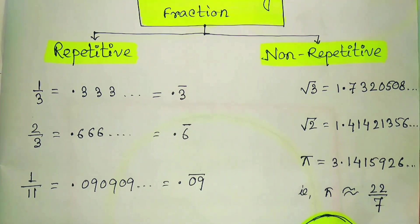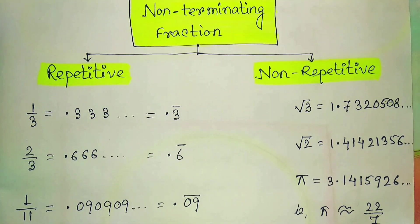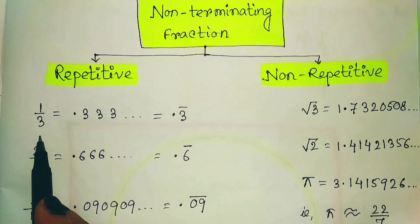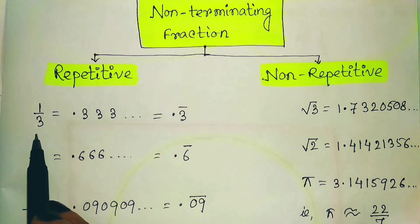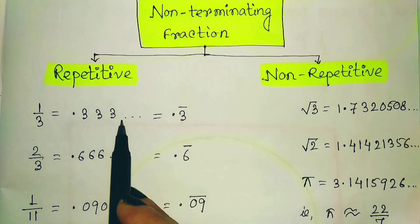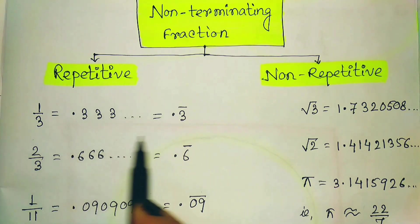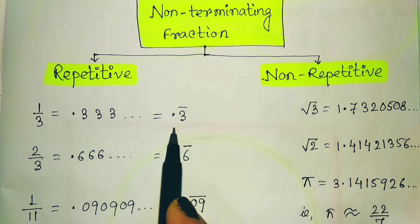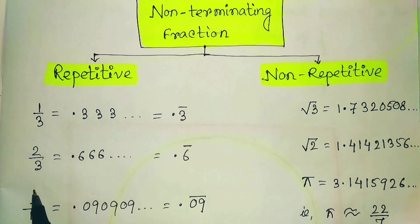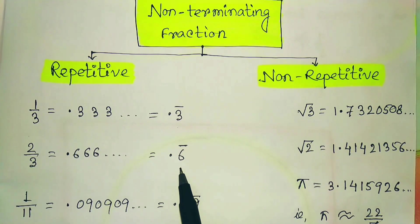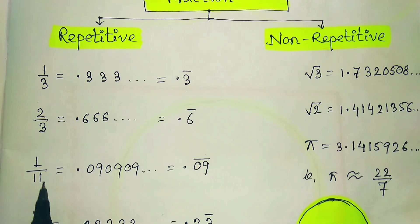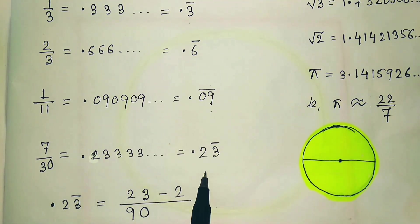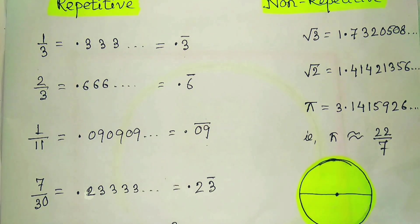For repetitive fractions, consider 1/3: its decimal value is 0.3333... continuing to infinity, written as 0.3̄. Similarly, 2/3 = 0.6̄, 1/11 = 0.09̄, and 3/7 or 7/30 can also be expressed with bar notation. These are all non-terminating but repetitive fractions — the digits after the decimal repeat in a pattern.